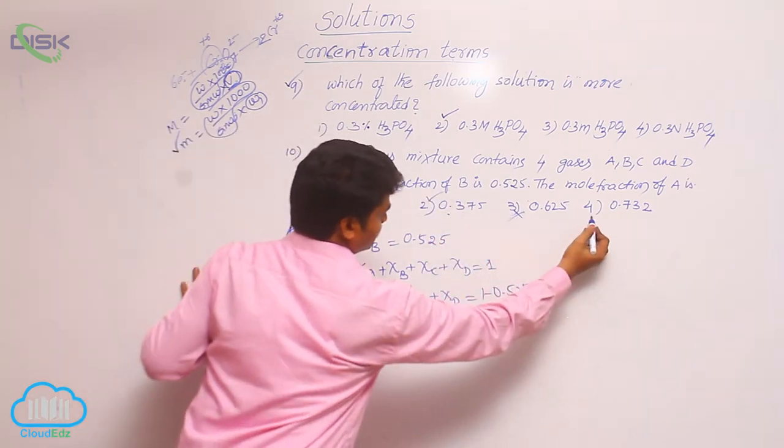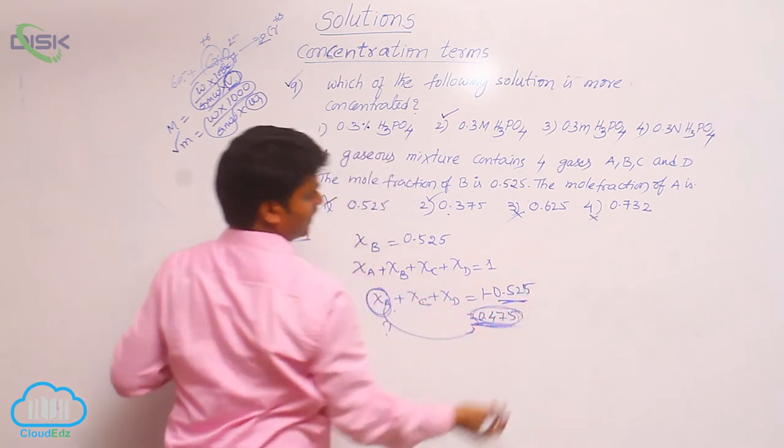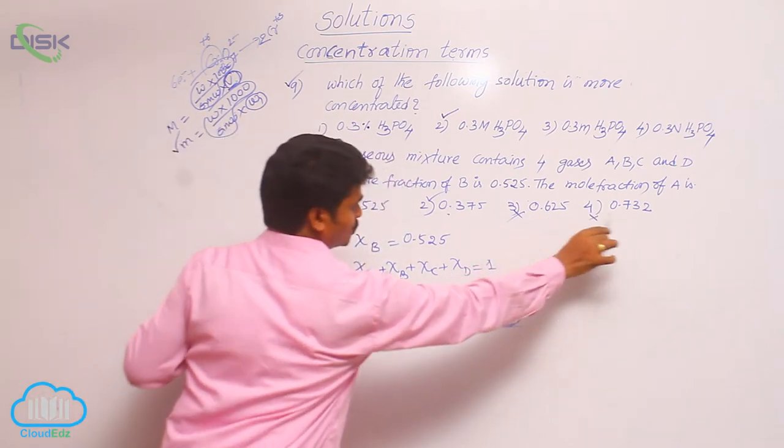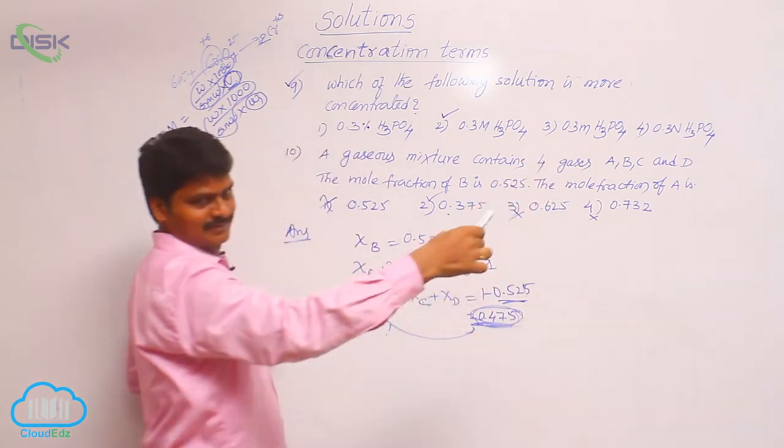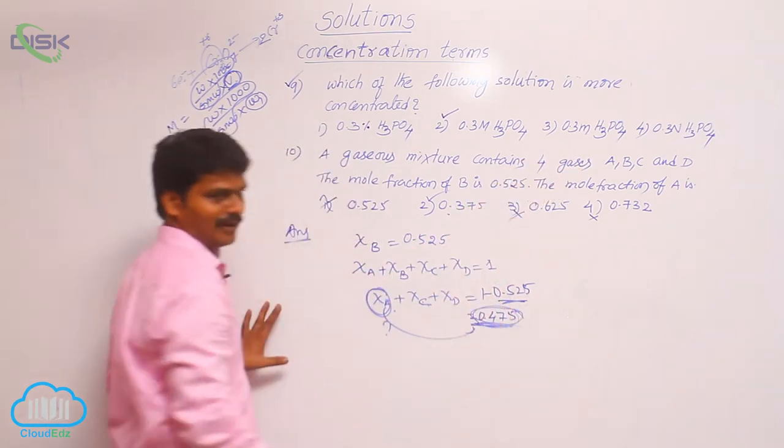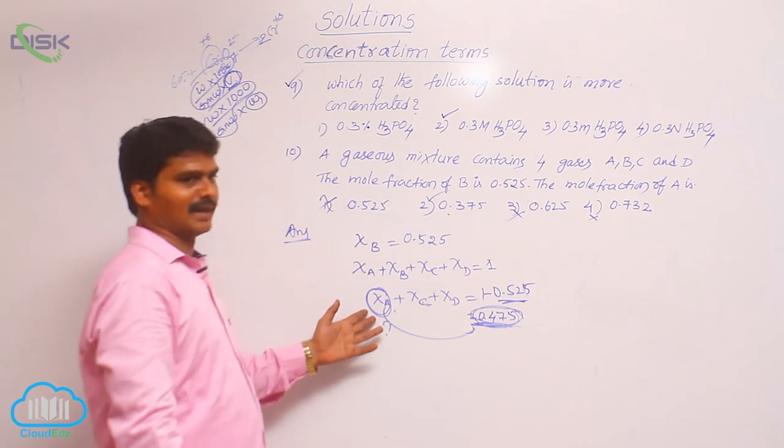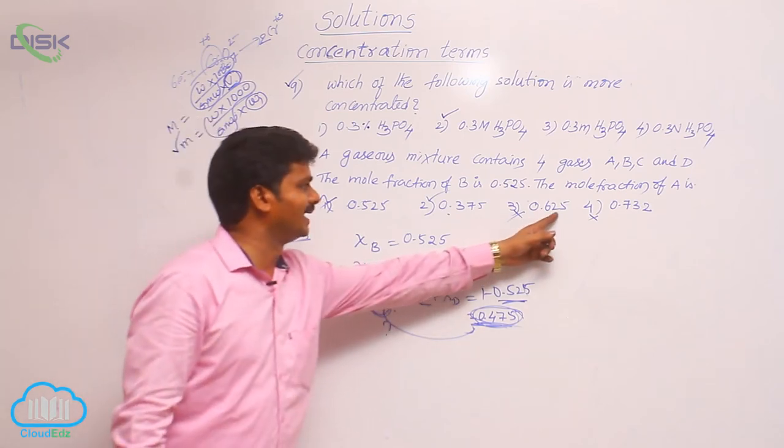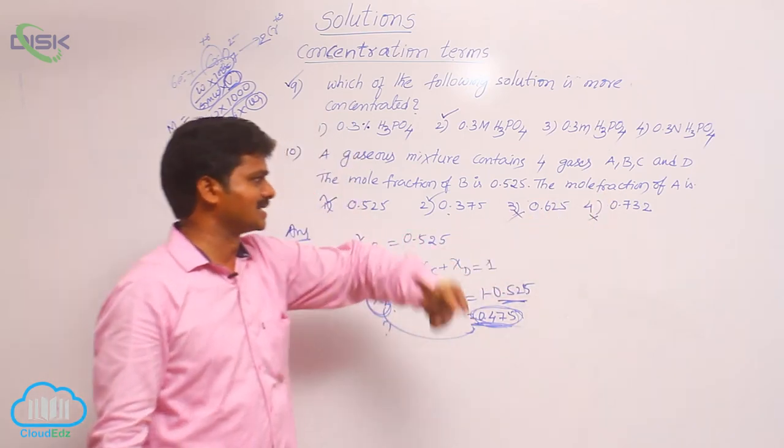So why these 3rd and 4th options are wrong? Because these 2 are more than half. Sum of 3 is 0.475. Then only one component should not be 0.625 and should not be 0.732.